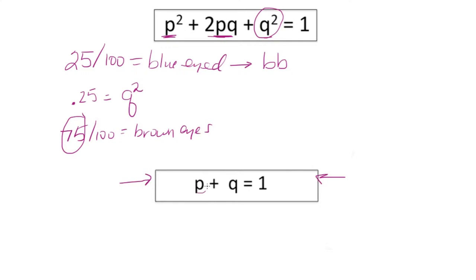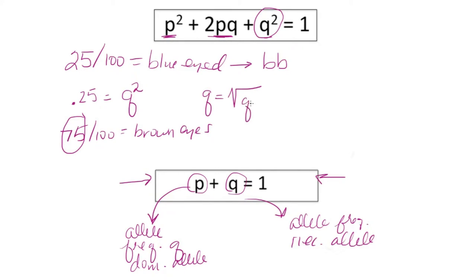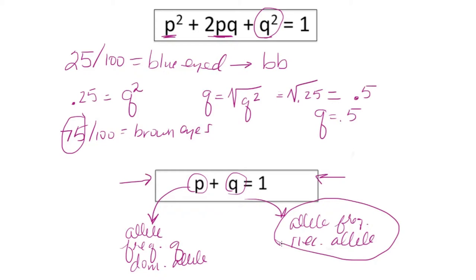Once we find q², we can convert it into q. There's another important equation: p plus q equals one, where p represents the allele frequency of the dominant allele and q represents the allele frequency of the recessive allele. Since q² equals 0.25, q is just the square root of 0.25, which equals 0.5. So the allele frequency for the recessive allele is 0.5.